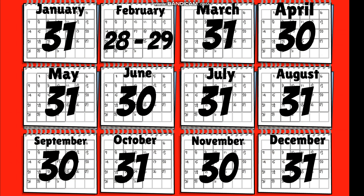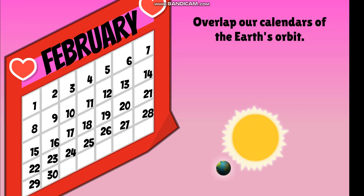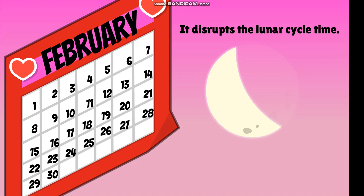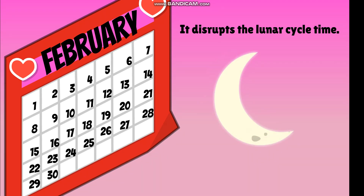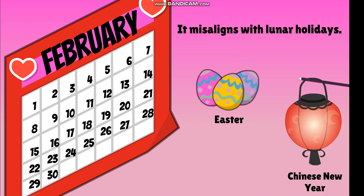Now that we understand why February has 28 or 29 days and how leap years work, let's imagine a change. Since February sits between two months with 31 days, what if we give it 30 days instead? If February had 30 days, it would make a total of 367 days a year. It would overlap our calendars with the Earth's orbit, disrupt the lunar cycle, and misalign lunar holidays such as Easter, Chinese New Year, and more.